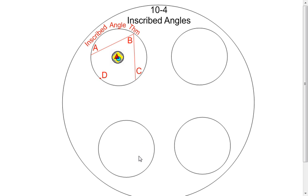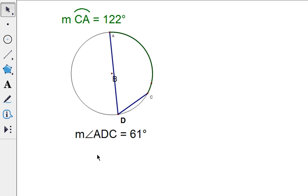Now the inscribed angle theorem deals with the measure of the angle. So in this case it would be measure of angle ABC or angle B, and then the measure of its intercepted arc, which is arc ADC here. We're going to look at the measures of those two things on a sketchpad file.